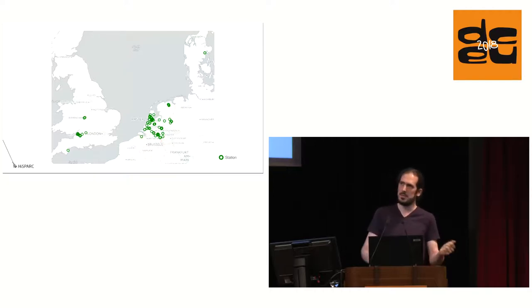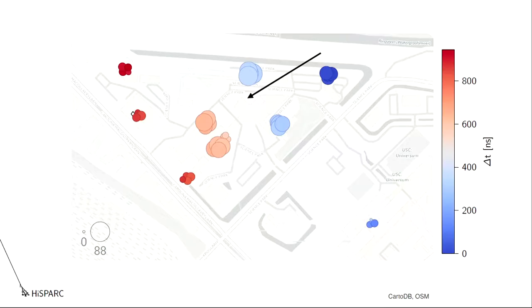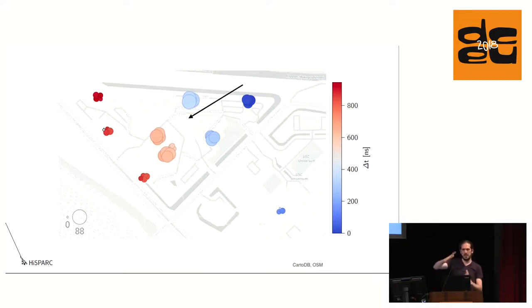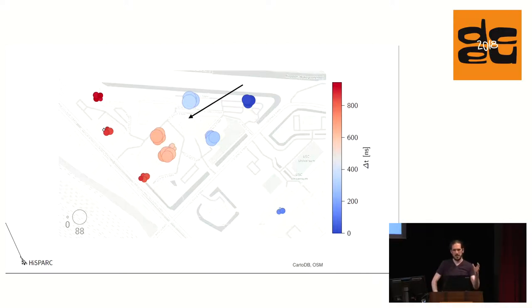Students can work with data from their station and all other stations and do nice experiments — learning about relativity, quantum physics, and other interesting stuff. This is an example of an event at Science Park in Amsterdam where several stations are close together. The color indicates arrival time — more blue is earlier, red is later. One particle comes from outer space, creates all these new particles, they hit the ground in a flat plane. Using the timing difference you can determine the direction of the air shower, and using the number of particles you can guess where the core was and estimate the energy.